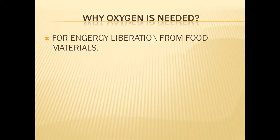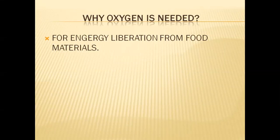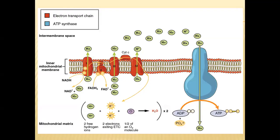Why is oxygen essential for all these organisms? In last classes, we have seen that oxygen is very important for the liberation of energy from food materials. Food materials give energy for us, but that energy will be liberated from those food materials only when the food is reacted with oxygen. Oxygenation of food materials only delivers the energy inside those food materials.